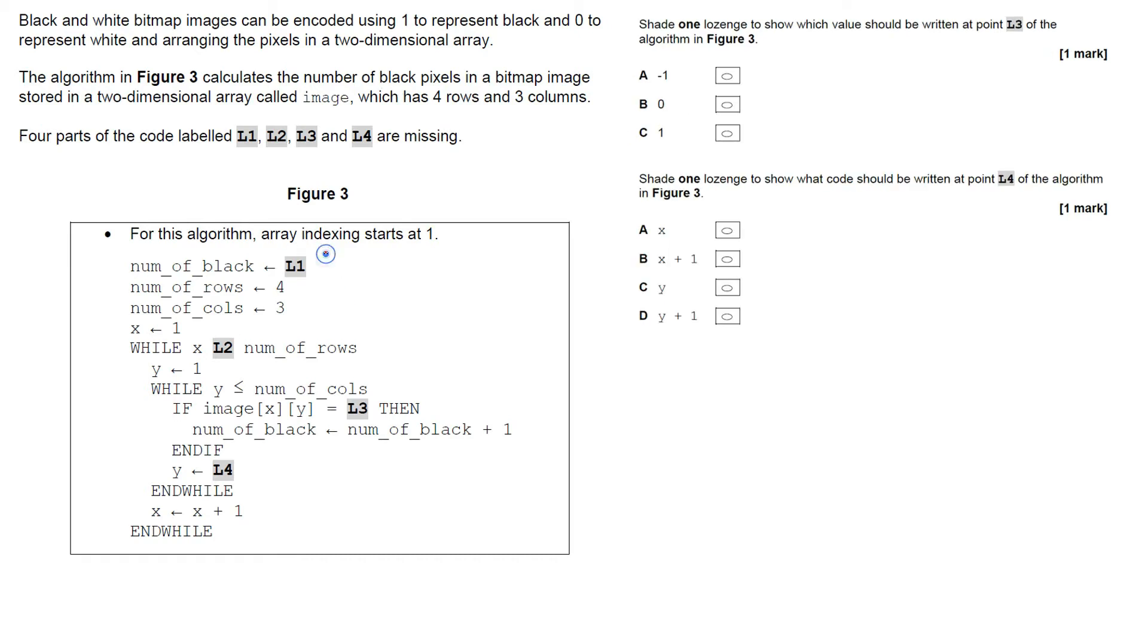So looking on to the next two questions. Just going to write on there zero and less than and equal to, just to help me out there. So the next two questions are asking: firstly, shade one lozenge to show which value should be written at point L3 of the algorithm in Figure 3. So we're looking at this one now, L3. So what we're trying to do here is we're looking at the number of rows.